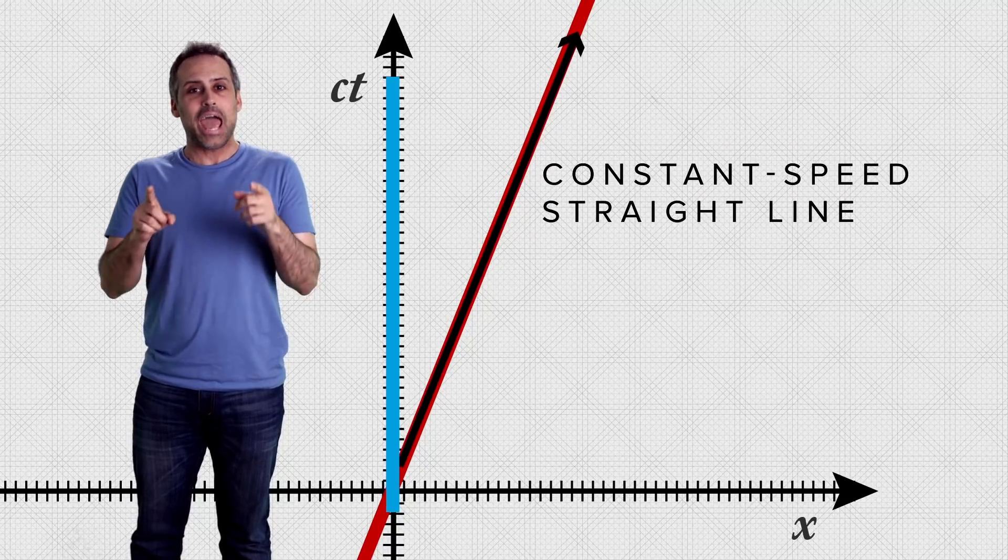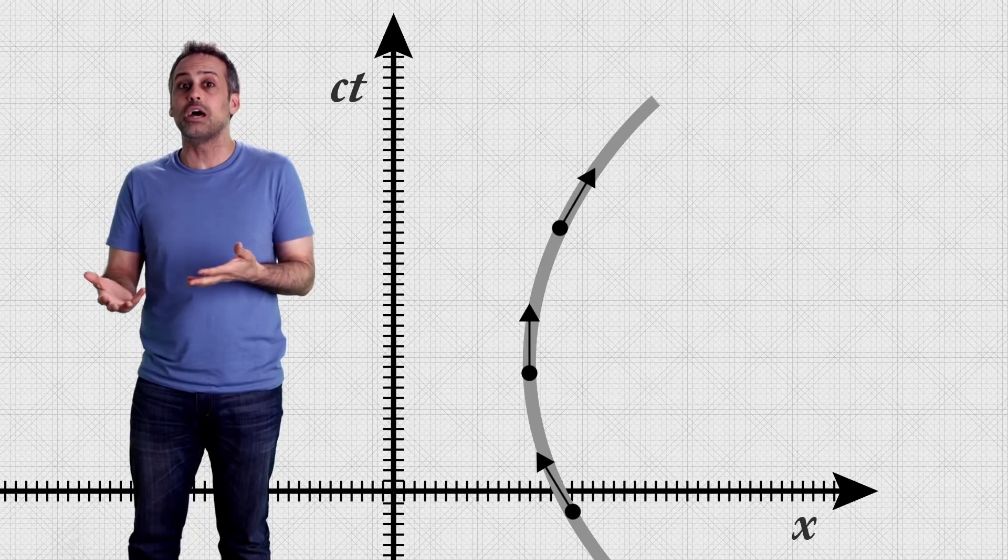Then the world line of every inertial observer is a constant speed straight line. That's what I've been meaning all along. And accelerated observers' world lines are constant speed non-straight lines.